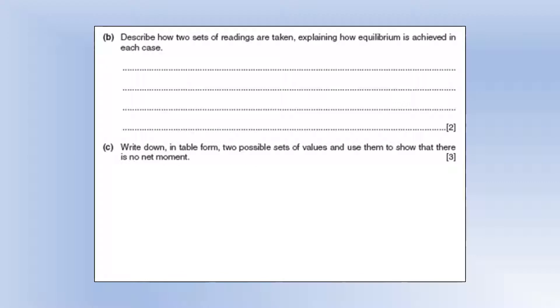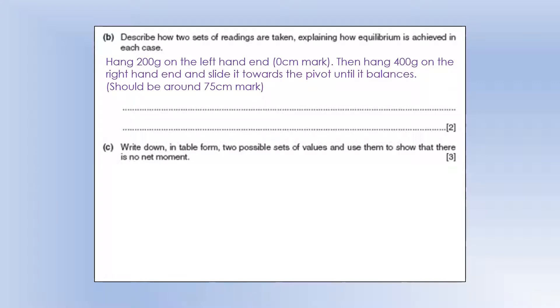Describe how two sets of readings are taken, explaining how equilibrium is achieved in each case. So first, we're given freedom to choose the masses, so I picked 200 and 400. You can pick whatever you like as long as it works. So I'm going to hang that on the left-hand end at zero centimeters, so it's 50 centimeters from the pivot. Then I'm going to put 400 grams on the right-hand end and slide it towards the pivot until it balances, which should be around the 75 centimeter mark, so it's 25 centimeters from the pivot, or essentially half the distance.